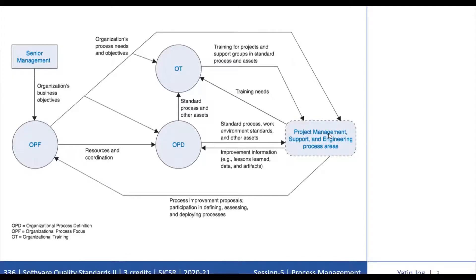The Organizational Process Definition process area, OPD, establishes and maintains the organization's set of standard processes, work environment standards, and other assets based on the process needs and objectives of the organization. These other assets include descriptions of life cycle models, process tailoring guidelines, and process-related documentation and data.